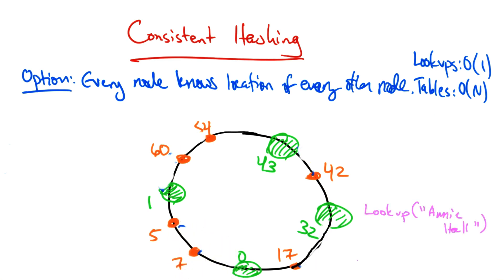So for example, if node 32 wanted to look up the location of Annie Hall, that value might hash to 60. And if every node maintained a routing table entry for every other node, 32 would know that the key corresponding to ID 60 was located at node 1. So the lookup would be order 1, but the table would be order n.